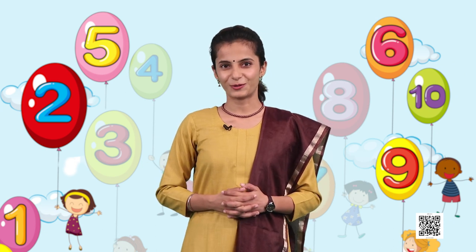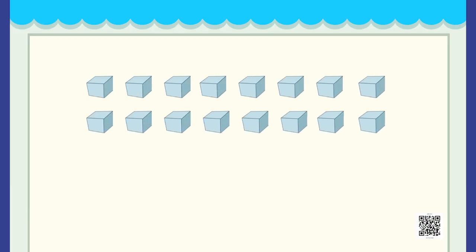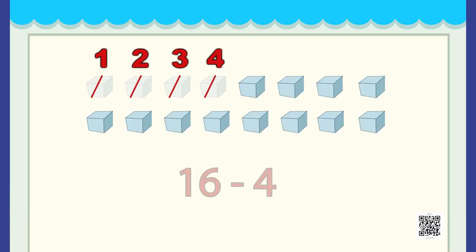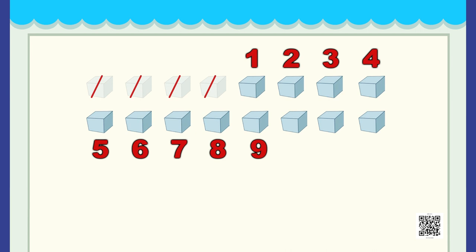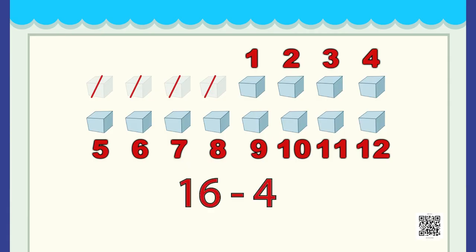Let us do subtraction with blocks, sticks and a few more objects. In the first part we have 16 blocks, from which we removed 4 blocks. So 16 minus 4, how much will it be? Let's count the remaining blocks. We are left with 12 blocks. So we write the number 12 here. It makes 16 minus 4 equals 12.